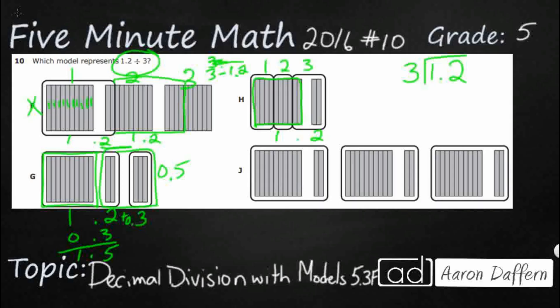And then it looks like I've got 1, 2, 3 groups that are equal. So I'm thinking H might be it. And this looks like each group has got 4 tenths. This is 0.4, 0.4. And this 0.4 stretches across the first whole and the 0.2 left over. So H is looking pretty good.